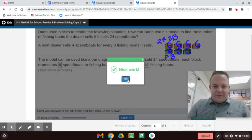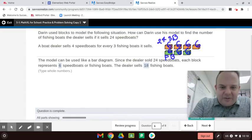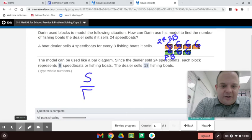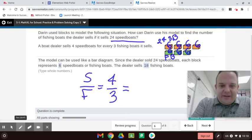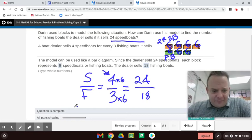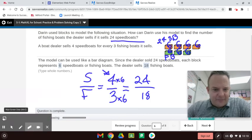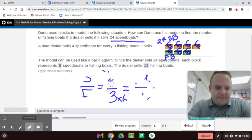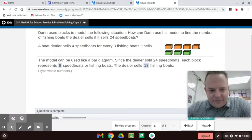Okay, so to answer this question here, we have the model can be used since the dealer sold 24 speedboats, each block represents six speedboats or fishing boats. The dealer sells six plus six plus six or six times three is 18 fishing boats. Now, the way I would do this one, now that's a block model, that's like the new math. The way I would do this is I would go speedboats to fishing boats equals four speedboats per every three fishing boats, which equals, and then they give you one of them. So this is the known ratio, four to three, and the one they give you is 24 speedboats, and now you find a relationship. So four times six is 24, so three times six is 18. That's how I do it. That's proportional reasoning, but that is how you do the model.